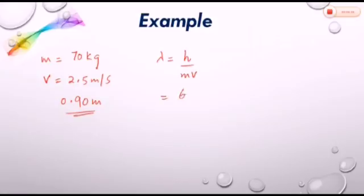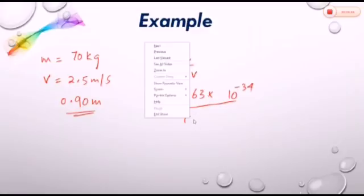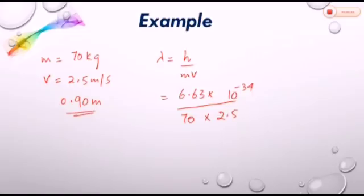h will be 6.63 into 10 raised to the power minus 34 divided by m is 70 kg into 2.5. After calculations,